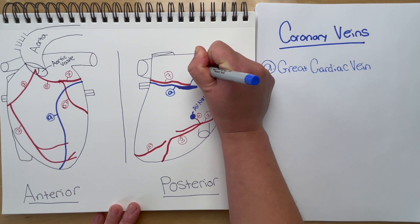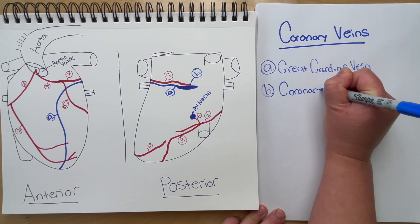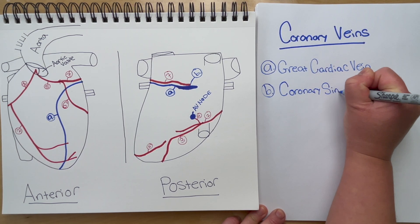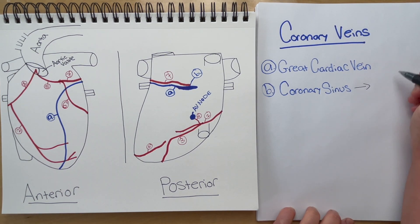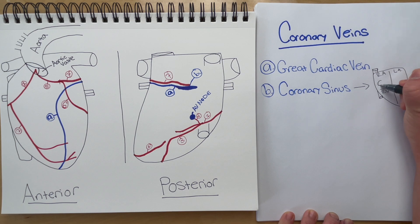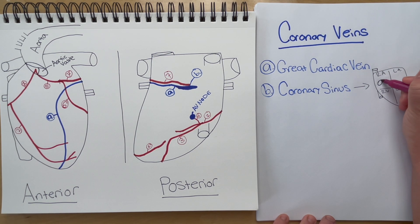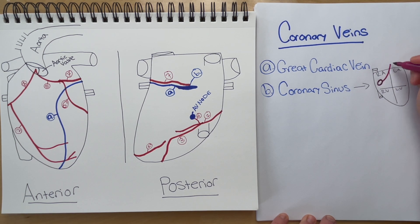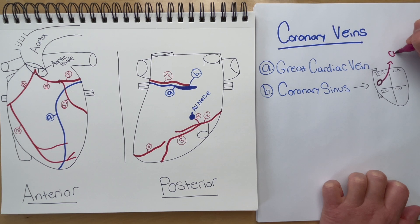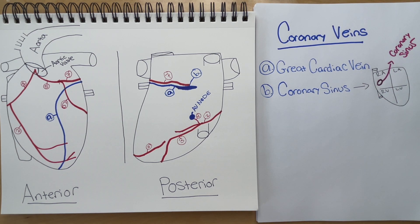Next we have the coronary sinus, visible on the posterior portion of the heart. It is that thick portion where all three veins meet. All of the coronary veins meet up at the coronary sinus, where the deoxygenated blood is taken to the right atrium. The coronary sinus opens up inside of the right atrium, and deoxygenated blood from the myocardium is dumped in here and then circulates with the rest of the deoxygenated blood to get oxygenated.